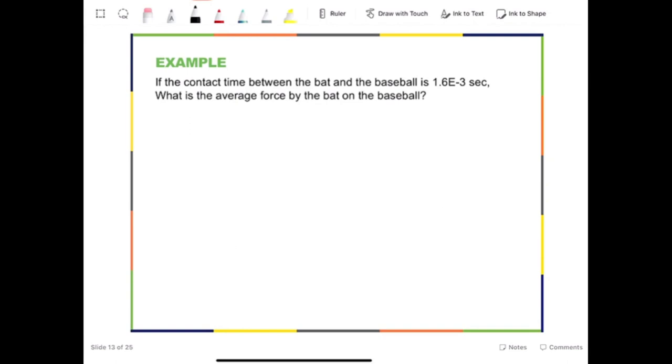Let's continue the previous example. If the contact time between the bat and the baseball is 1.6 times 10 to the negative third seconds, what is the average force by the bat on the baseball? Again, I want you to think about the contact between the bat and the baseball. The force actually is not constant. If you remember the figure in the first example, the force starts from 0 and goes up very quickly to the top peak and then drops to 0 again. So this process is not a constant force. But for the sake of simplicity, we can always use the average force to substitute the real force.